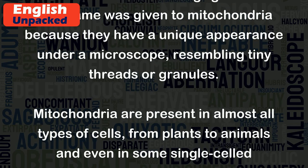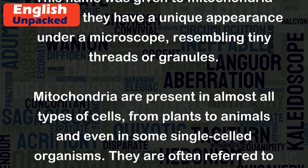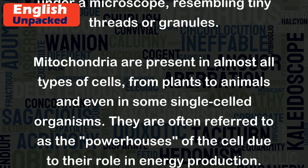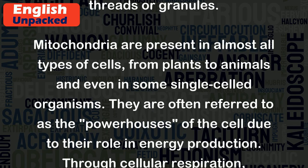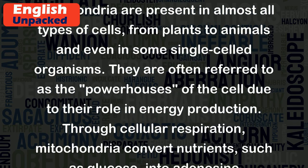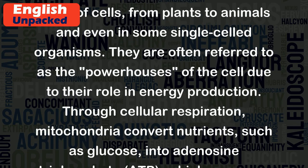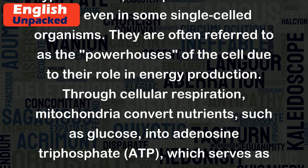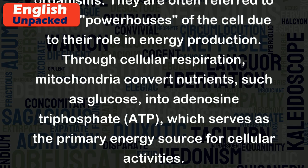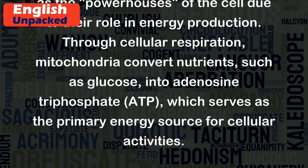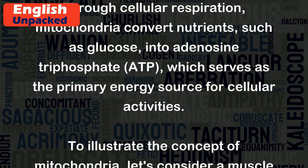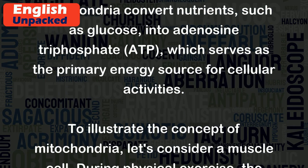Mitochondria are present in almost all types of cells, from plants to animals and even in some single-celled organisms. They are often referred to as the powerhouses of the cell due to their role in energy production. Through cellular respiration, mitochondria convert nutrients, such as glucose, into adenosine triphosphate, ATP, which serves as the primary energy source for cellular activities.